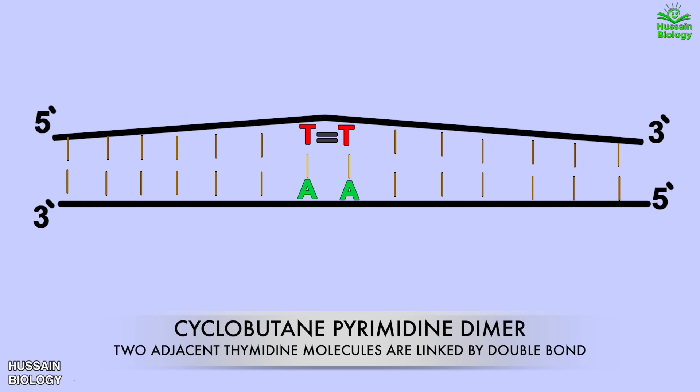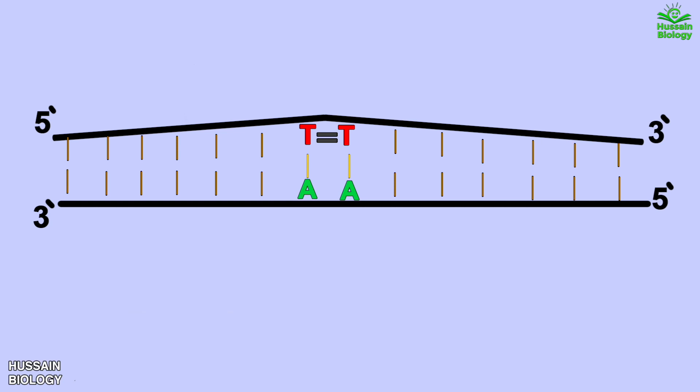We see we have 2 thymidine molecules present on the same DNA strand linked by covalent bond after the UV exposure. Now we need to fix this DNA damage, and in prokaryotes we have the pathway that's nucleotide excision repair.